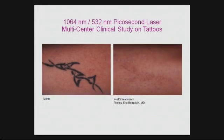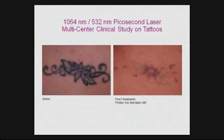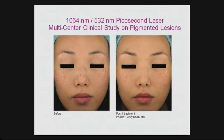Here are some examples: 1064 and 532 nanometer with three treatments. Again, Eric Bernstein, three treatments. You see a colored center of the flower which did not respond the same way after three treatments. Here, probably one, two or three more — an Asian woman with freckling, and very nice clearing after one session only.